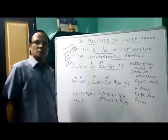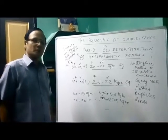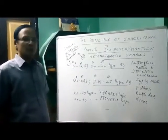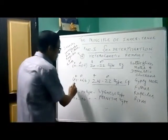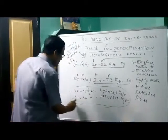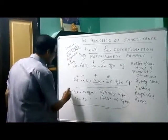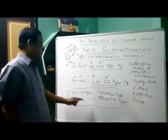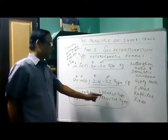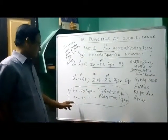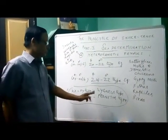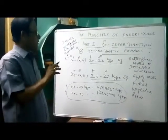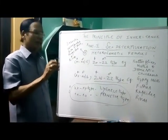Let us continue the discussion further. In the case of heterogametic males, we have seen already two types. The first type, XXXY, is called the A-type. The second type, XXX0, is called the from-inter type. So these are the two types coming under heterogametic males.